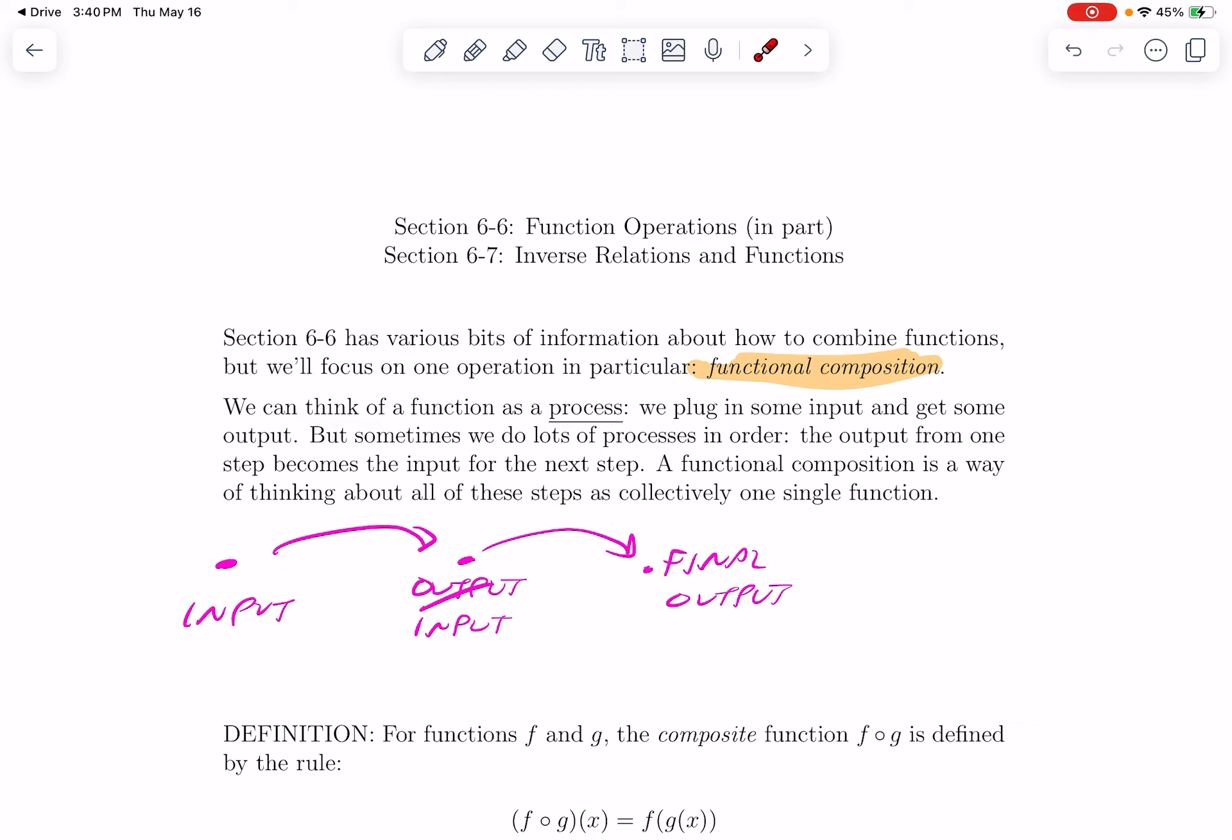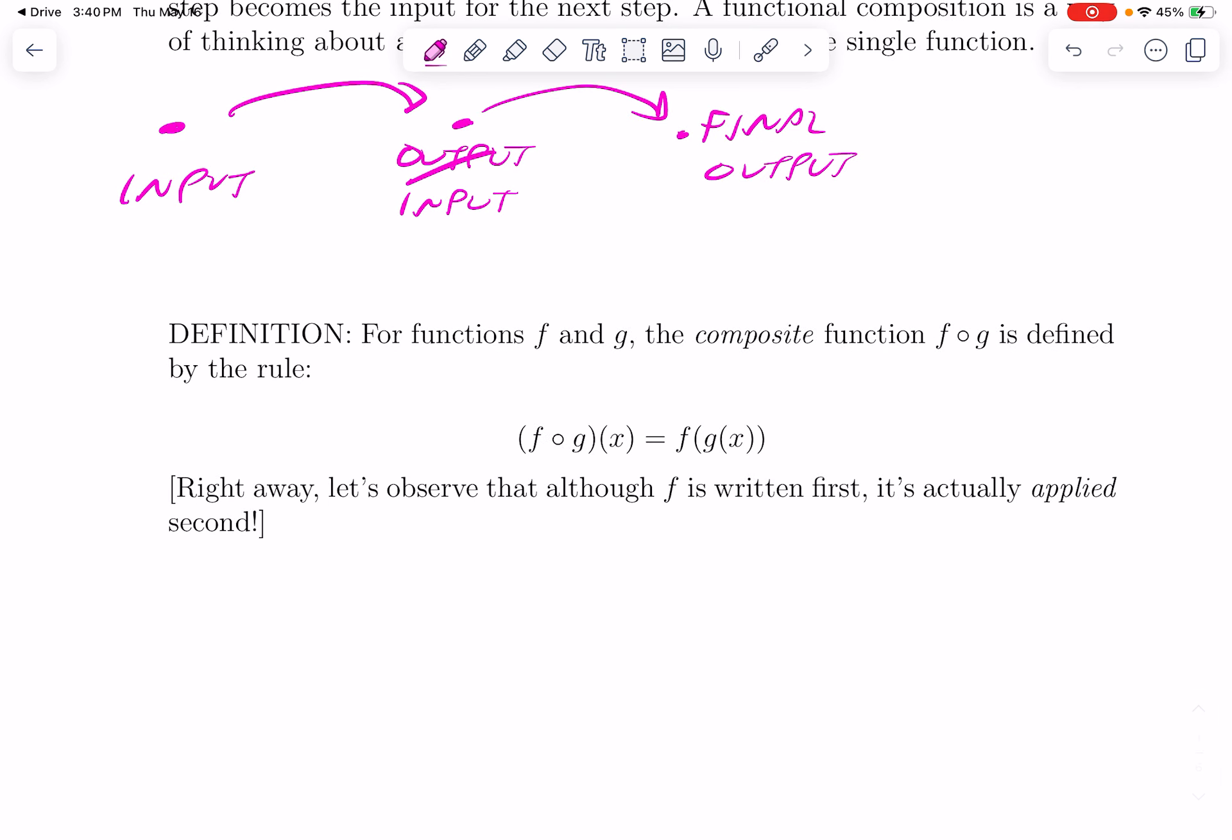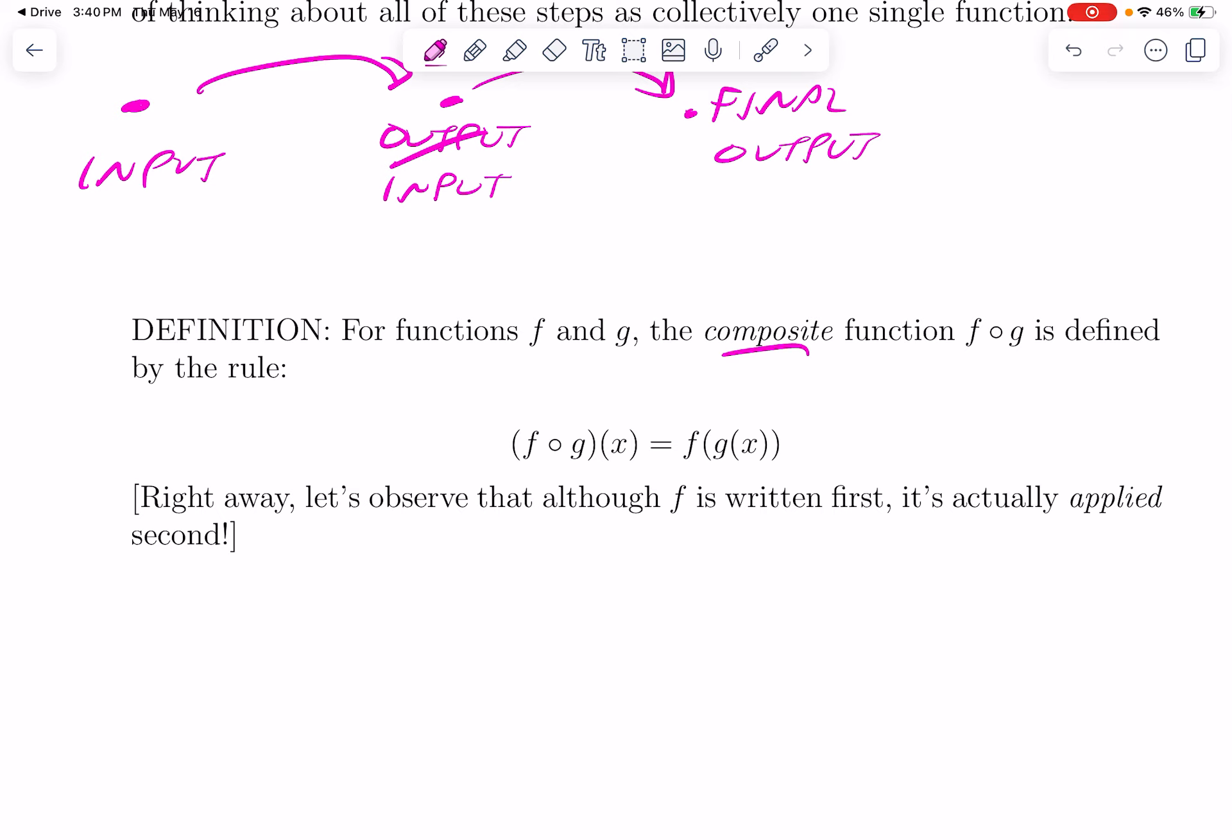So the idea is if I do functions back to back, that's really just a function. So this is what's known as a composite function or a composition. The notation for this uses this little circle. It's not the letter O, although it is very similar in appearance. And if we see two functions with the circle between them, it just means do them back to back. F circle G of X, by definition, just means F of G of X.